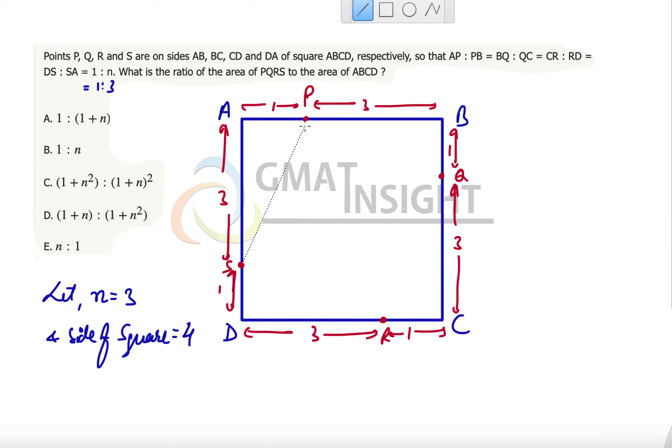Now let's quickly join these four points together. Because these points are dividing all the sides into one particular ratio, therefore this particular quadrilateral PQRS will also be a square. However, let us see whether it is needed or not.